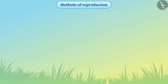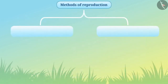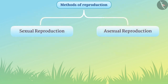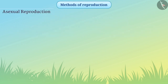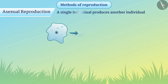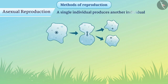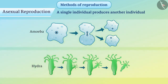We know there are two methods of reproduction: sexual reproduction and asexual reproduction. Let's understand them through comparison. The method of reproduction in which a single individual produces another individual is called asexual reproduction. For example, unicellular organisms like amoeba and hydra produce their next generation by asexual reproduction.